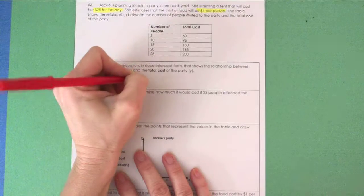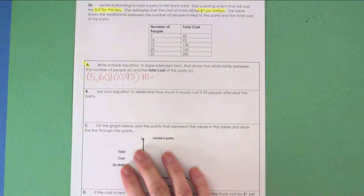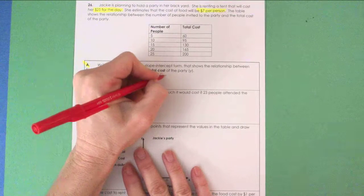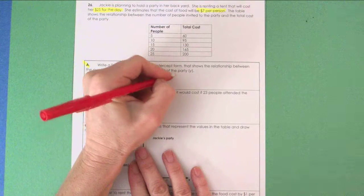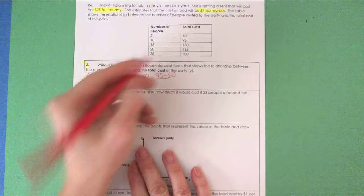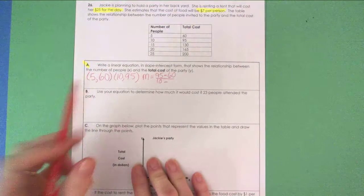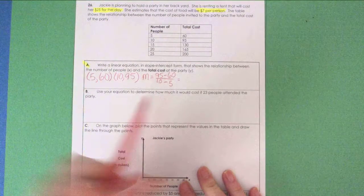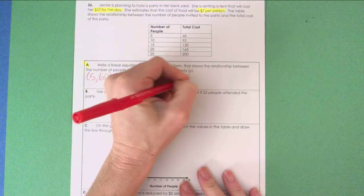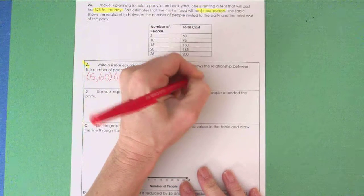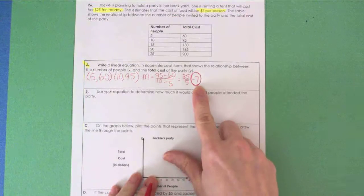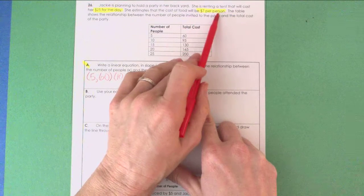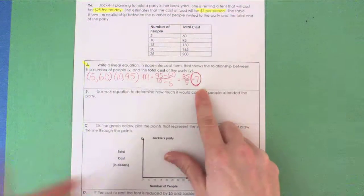I'm going to take (5,60) and (10,95) from the table. I am going to analyze my slope through those two points by taking my second Y, which is 95, minus my first Y, which is 60, and dividing that by my second X, which is 10, minus my first X, which is 5. That gives me 35 divided by 5, which divides out to 7. Just as I suspected, my slope or rate of change is $7, and that equates with this $7 per person.